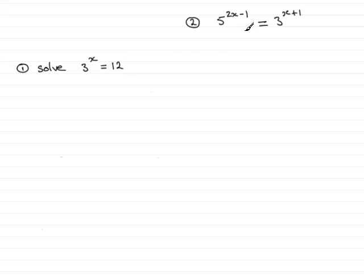And in this example, number 2, you'll notice that the unknown x appears not only above just one term but above two of them. I've got here a harder example, 5 to the power 2x minus 1 equals 3 to the power x plus 1.